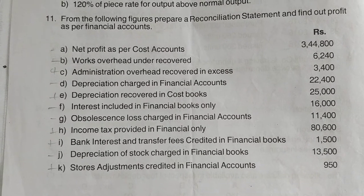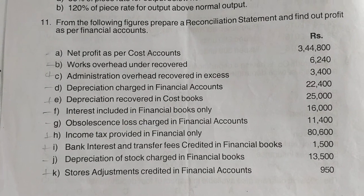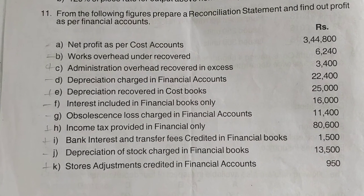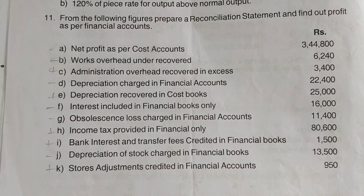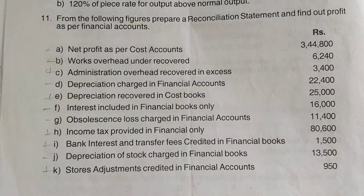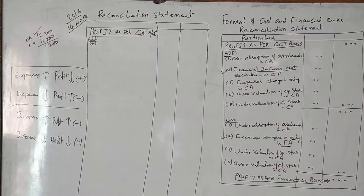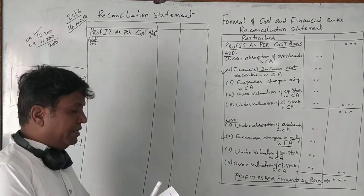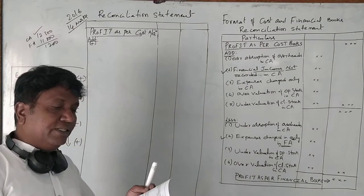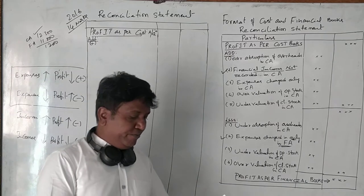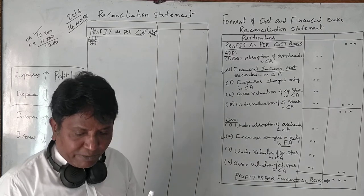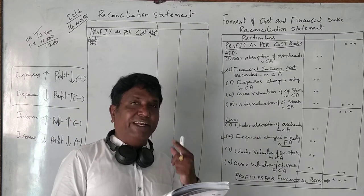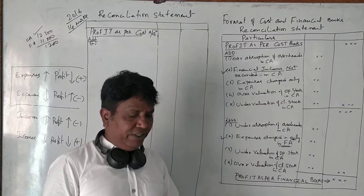This is a 2017 BBA question paper for Bangalore University, worth 14 marks. It's a very simple question — we can solve it in five minutes. From the following figures, prepare a reconciliation statement and find out the profit as per financial accounts.